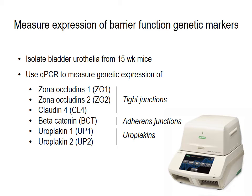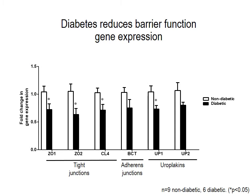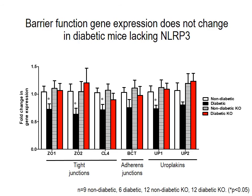We isolated bladder from 15-week mice and used qPCR to measure genetic expression of various markers of tight junctions, adherence junctions, as well as uroplakins. We see that diabetes significantly reduces the expression of most barrier function genes. Interestingly, we don't see this reduction in our diabetic mice lacking NLRP3, and here we see that barrier function gene expression is comparable in our non-diabetic mice as well as our diabetic mice without NLRP3.